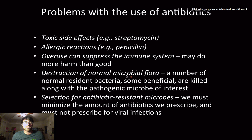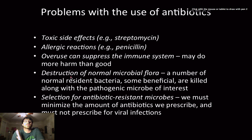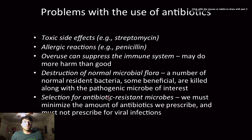Antibiotics also cause destruction of normal microbial flora. If you see someone on a lot of antibiotics whose tongue looks black or who has thrush, that's normal flora being killed and opportunistic infections taking over — which can actually kill you in some cases. Most importantly, the greatest problem is that antibiotic use creates selective pressure for resistance. We need to minimize prescriptions and stop using antibiotics for viral infections — too often doctors prescribe an antibiotic for a sore throat without even testing what's causing it.